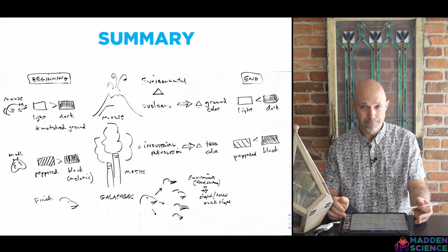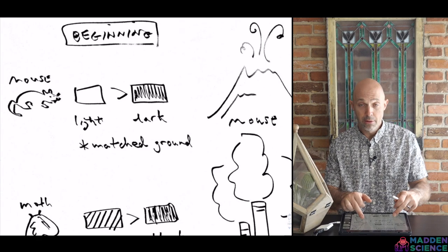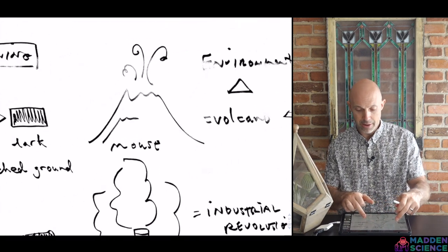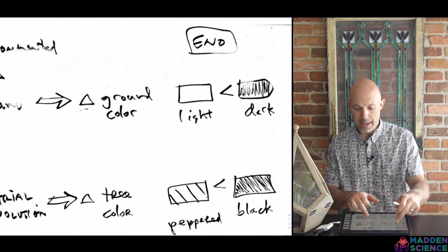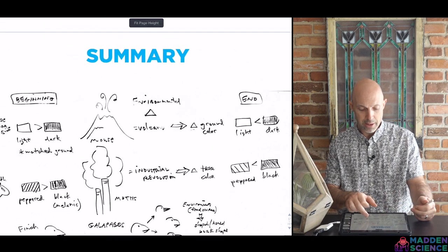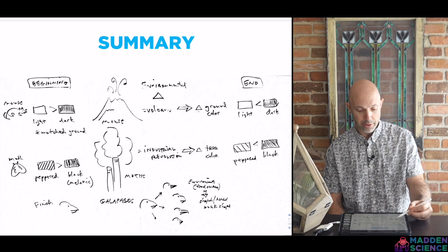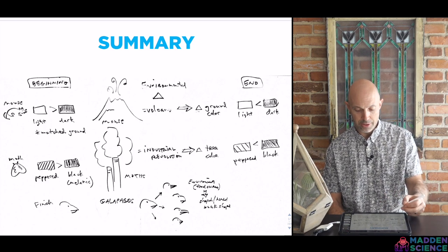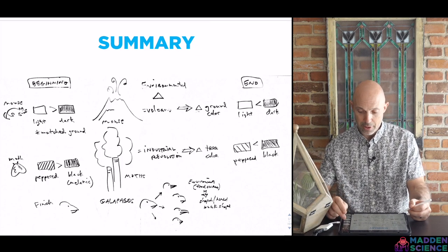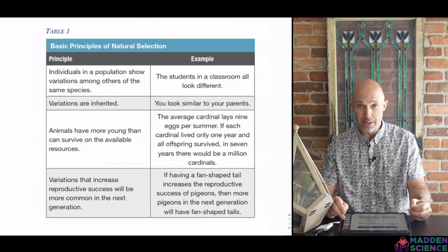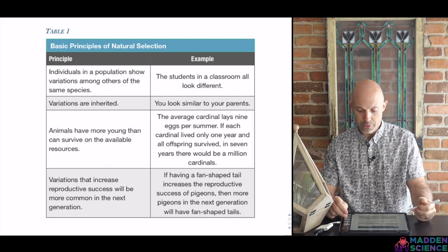In summary: rock pocket mice started out light with fewer dark to match the ground; there was an environmental change via volcano; the ground color changed; and in the end you actually have a shift in allelic frequency. This is much of what you saw with peppered moths — higher degree of peppered versus black, then a change. And it's not unlike what you see with adaptive radiation or divergent evolution present in Galapagos finches. This would be a good place to pause to look at these different examples and principles of natural selection.